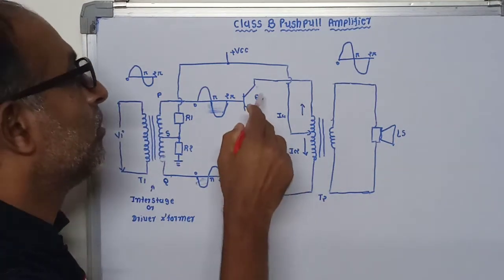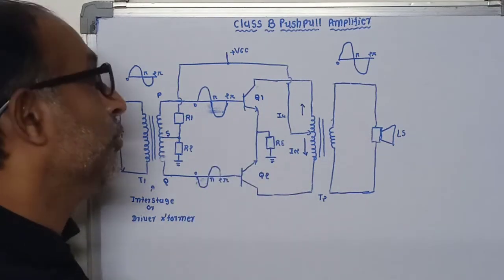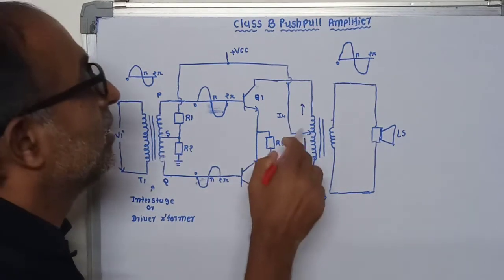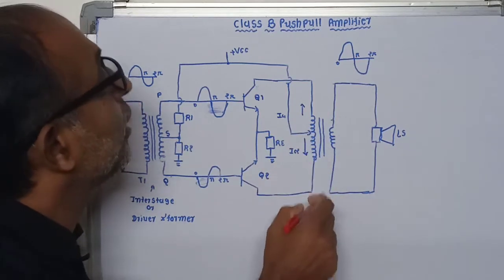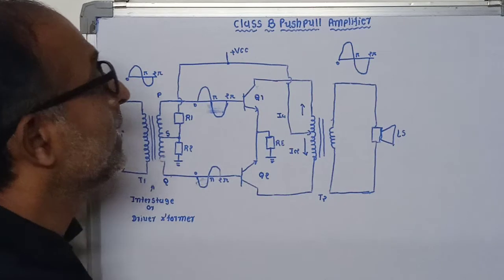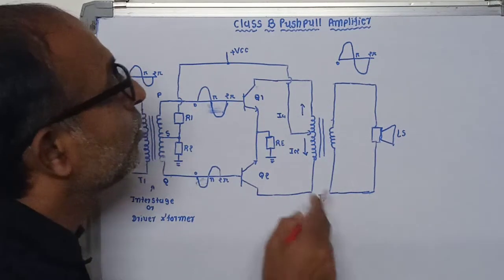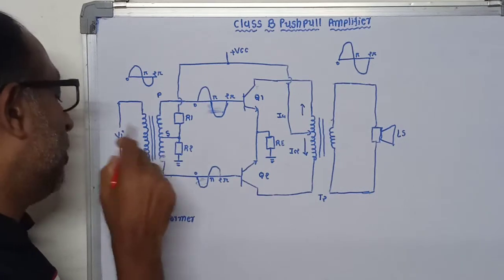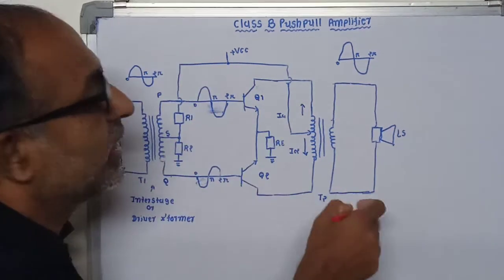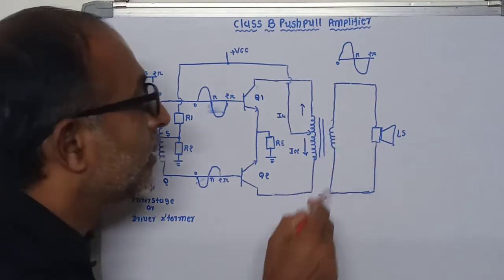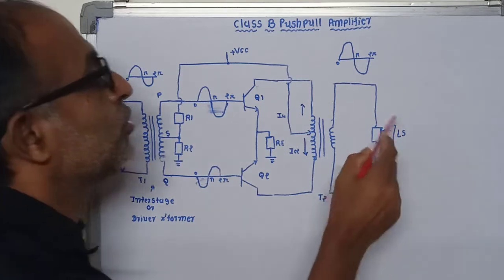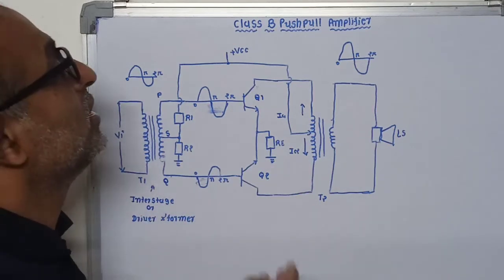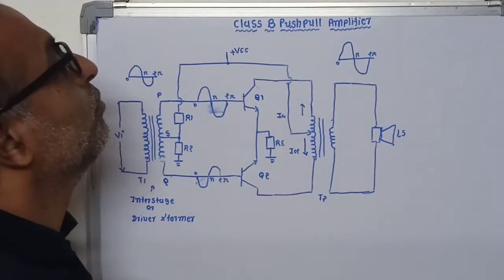The collector terminal of power transistors Q1 and Q2 is connected to the primary winding of transformer T2, and the center tap terminal of the primary winding of T2 is connected to the plus VCC supply. T2 is the output transformer. The input signal is applied at the input of transformer T1, and the load — here a loudspeaker — is connected in parallel with the secondary winding of transformer T2. This is the basic construction of the Class B push-pull amplifier.